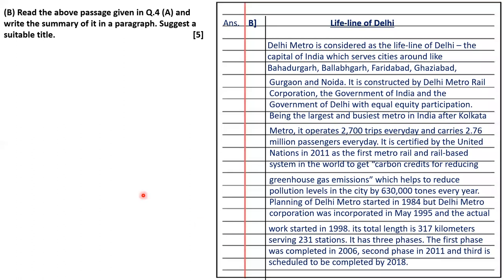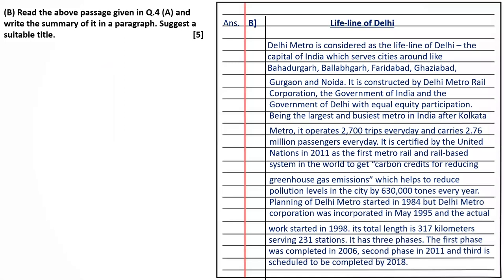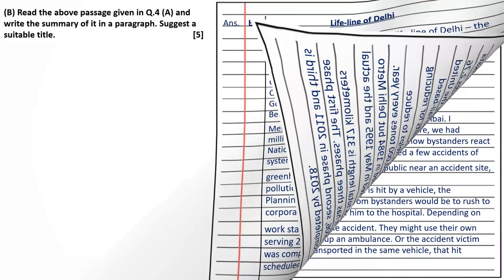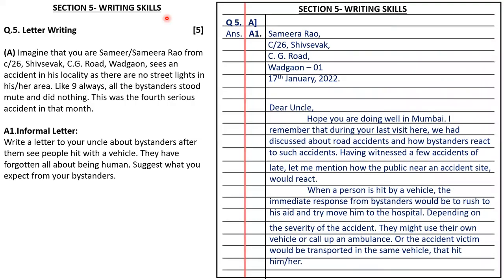Students, note that separate passages were given to you for summary writing. You have to write the summary for question number 4A. Then section five is writing skills — letter writing.